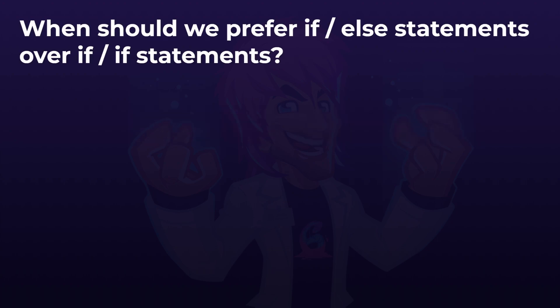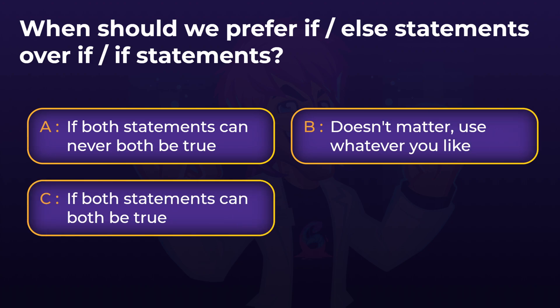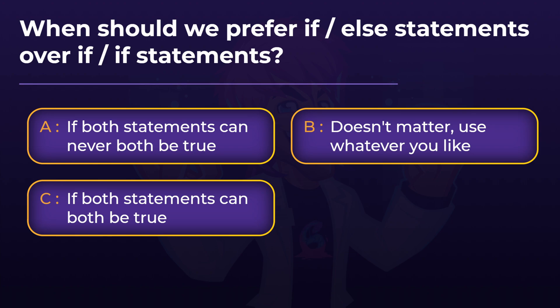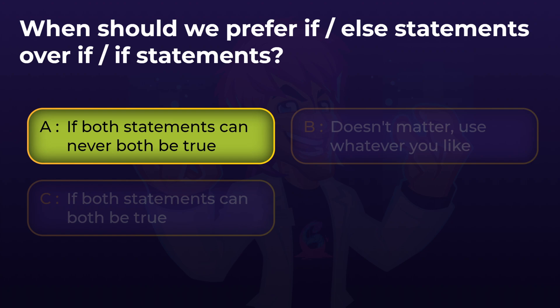A bit more difficult question now: when should we prefer an if-else statement over using an if-if statement? The answer is when both statements can never be both true. When we use if and else statements, if the first if statement is false, the second else won't run. If we have two ifs in a row, it's the same as having two completely separate ifs — both will always be evaluated regardless of the other. Therefore, if both statements can never be true, we should prefer if-else over if-if, otherwise the second if will always run, consuming CPU time, memory, and muddying valid code.